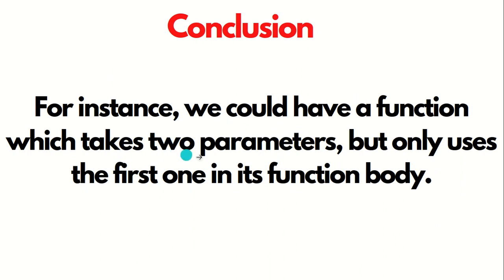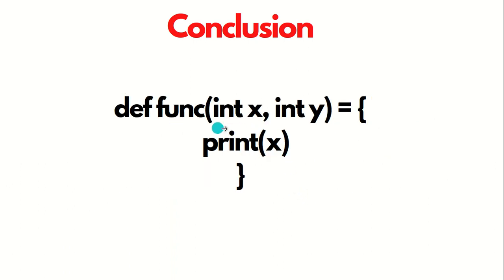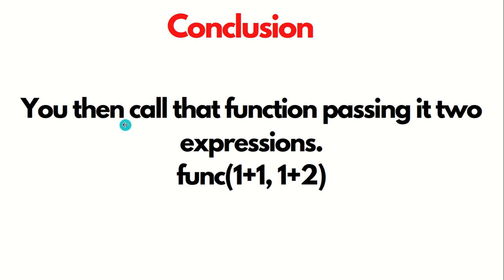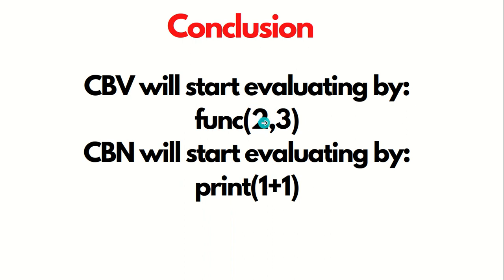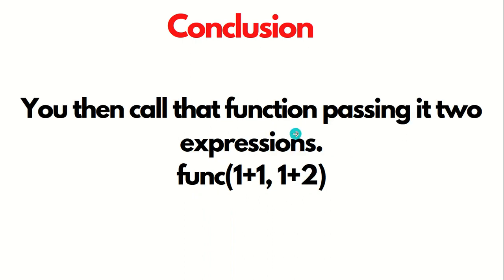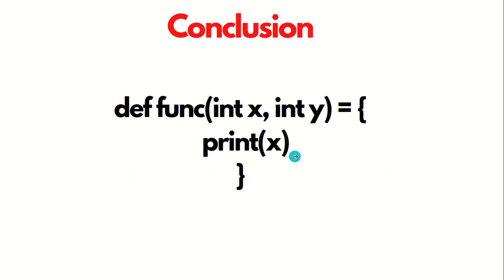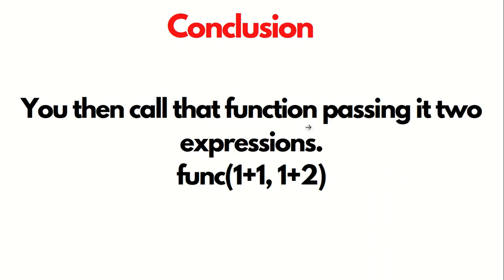For instance, consider a function that takes two parameters X and Y, but only uses X in the function body. If we call it passing one plus one and one plus two: with call by value, both are evaluated — two and three — even though three is not needed. But with call by name, only one plus one is evaluated, because only X is required and one plus one corresponds to X. One plus two is never evaluated. This is the meaning of call by name.